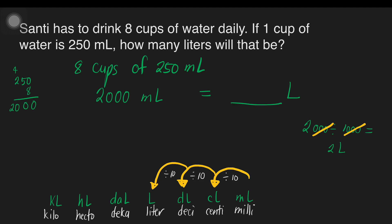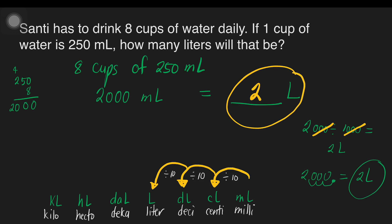We can also do the shortcut by moving decimal places. For example, 2,000 — the decimal point is at the back. Just move 3 steps or places and that will give us 2 liters. That is so fast and easy. So, that gives us 2 liters. It means Santi has to drink 2 liters of water daily.